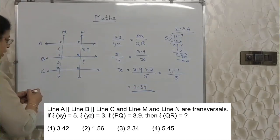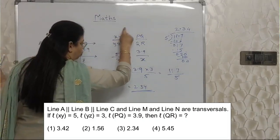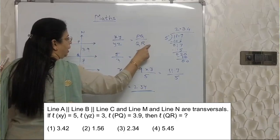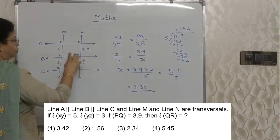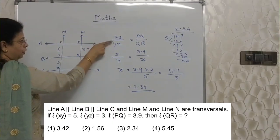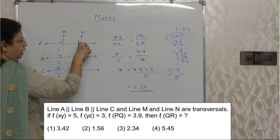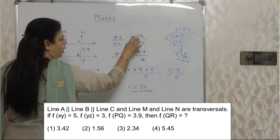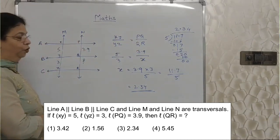Students, please be careful here. You must know this concept of intercepts — these segments are intercepts. The ratio of the two intercepts on one transversal is equal to the ratio of the intercepts on the other transversal.